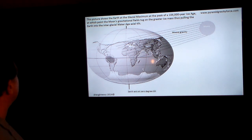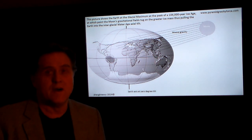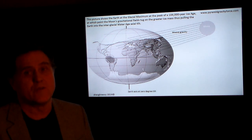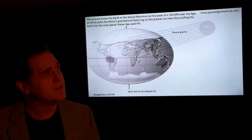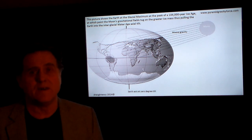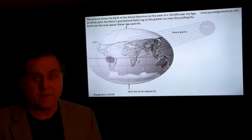This is a great picture right here. This picture shows the earth at the glacial maximum at the peak of the 104,000 year ice age, at which point the moon's gravitational fields tug on the greater ice mass thus pulling earth into the interglacial water age axial tilt. So that's what we're in right now. It's pulled us and now it's transferred from all the melting ice, and it's transferring rapidly because of humans. We're having a large effect on the ice melt, so we're actually expediting the tilt back to an ice age because of our behavior.